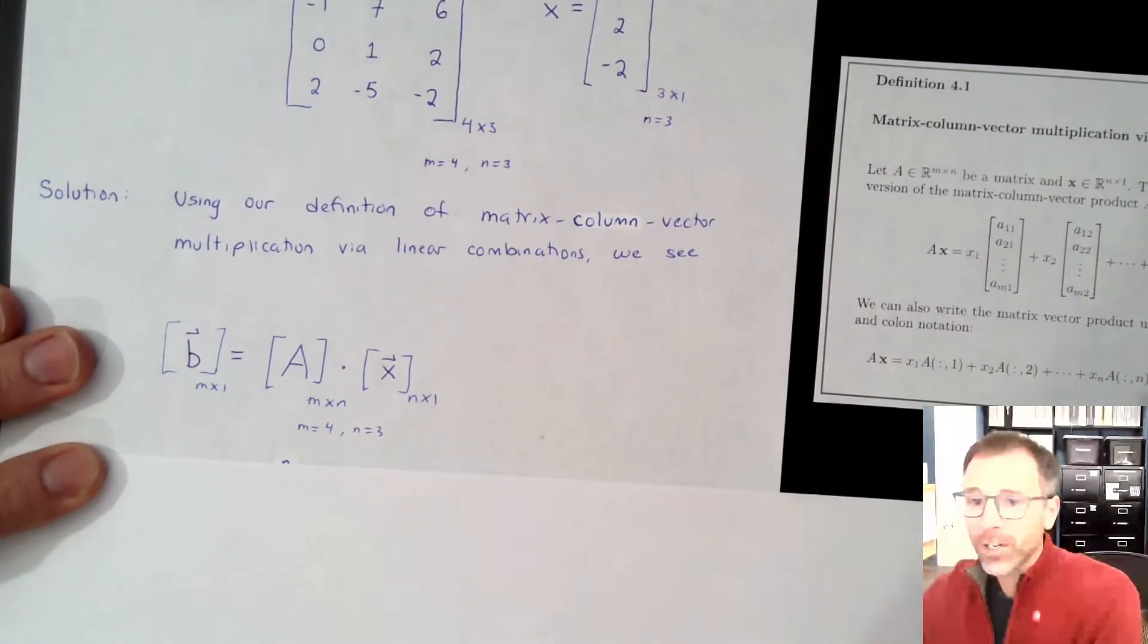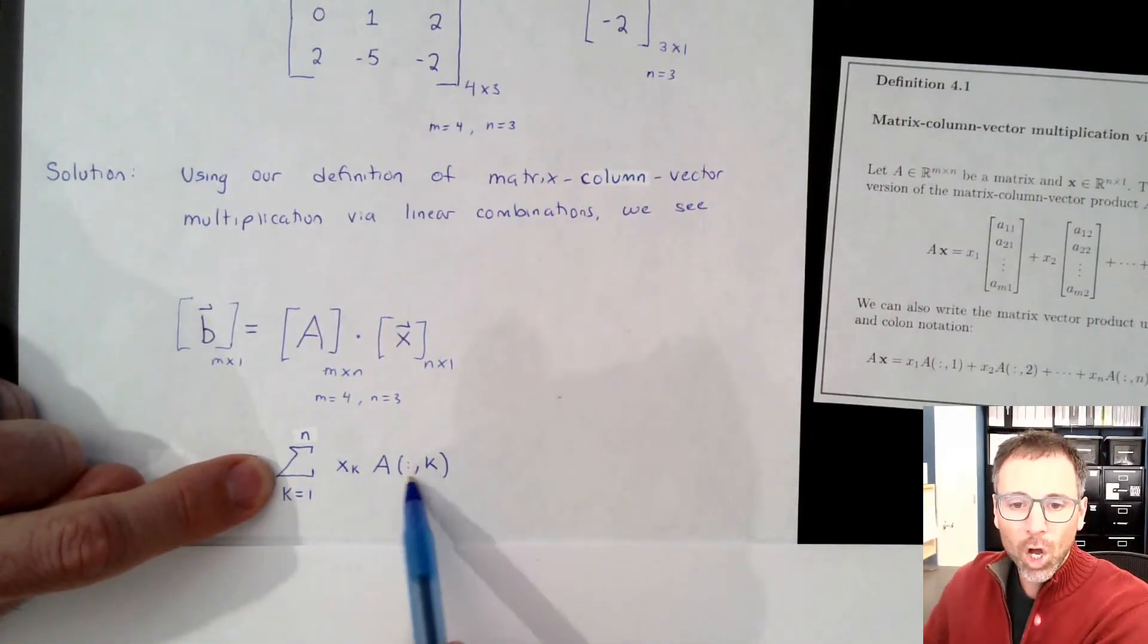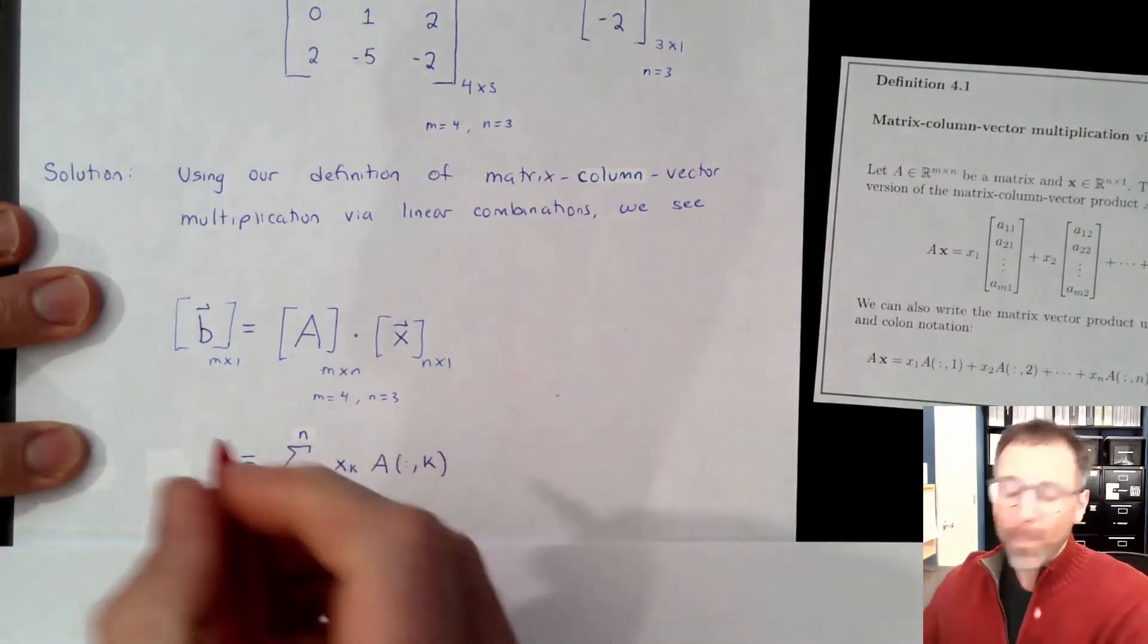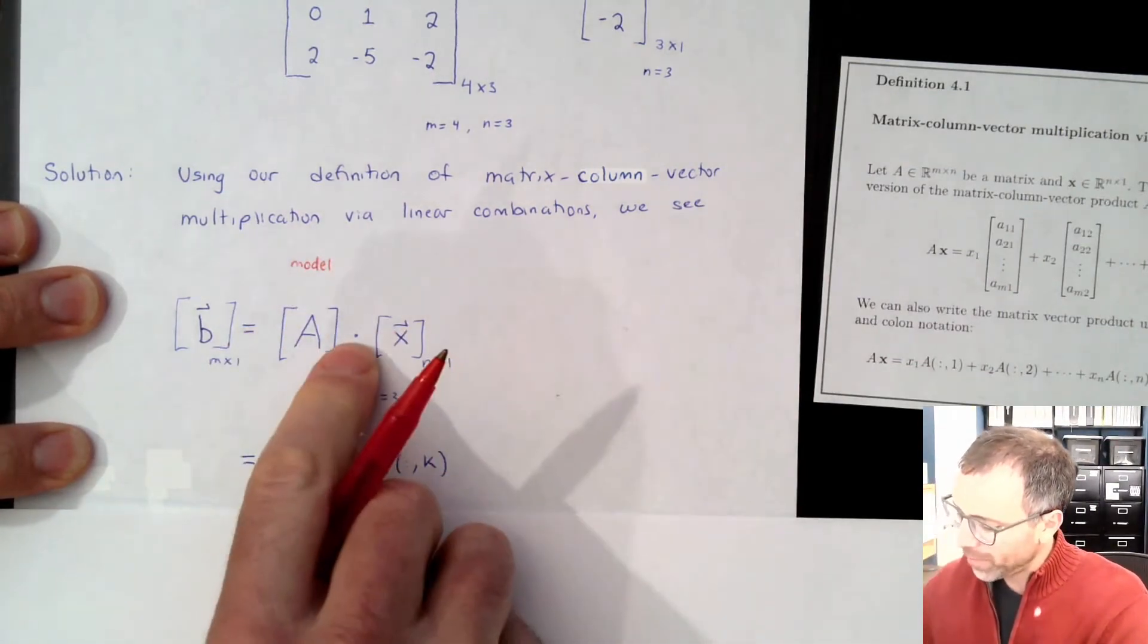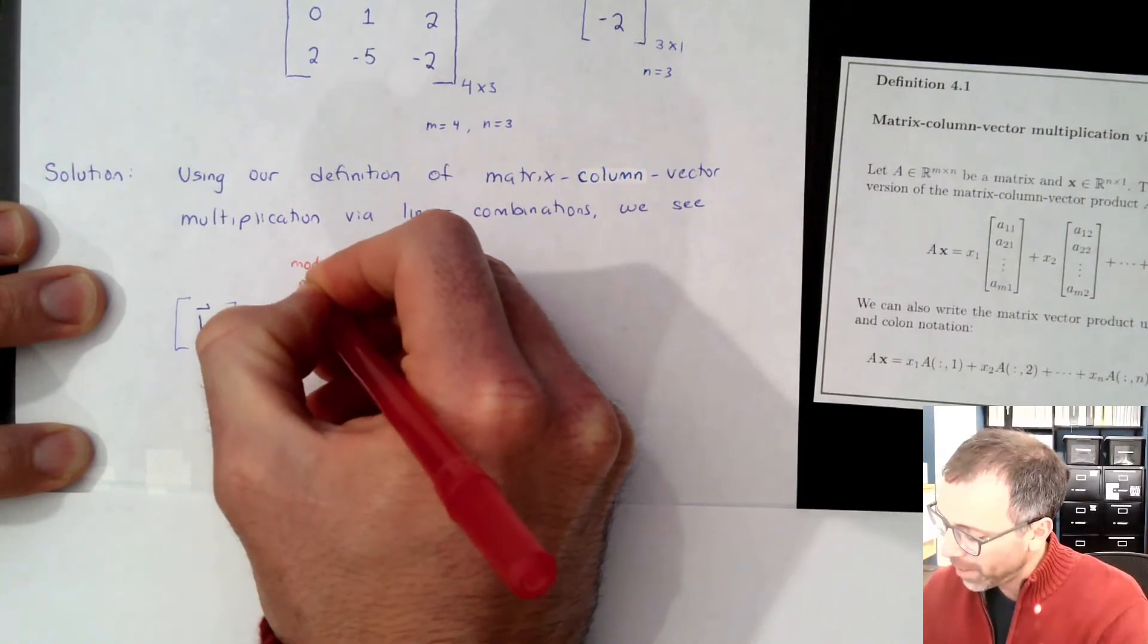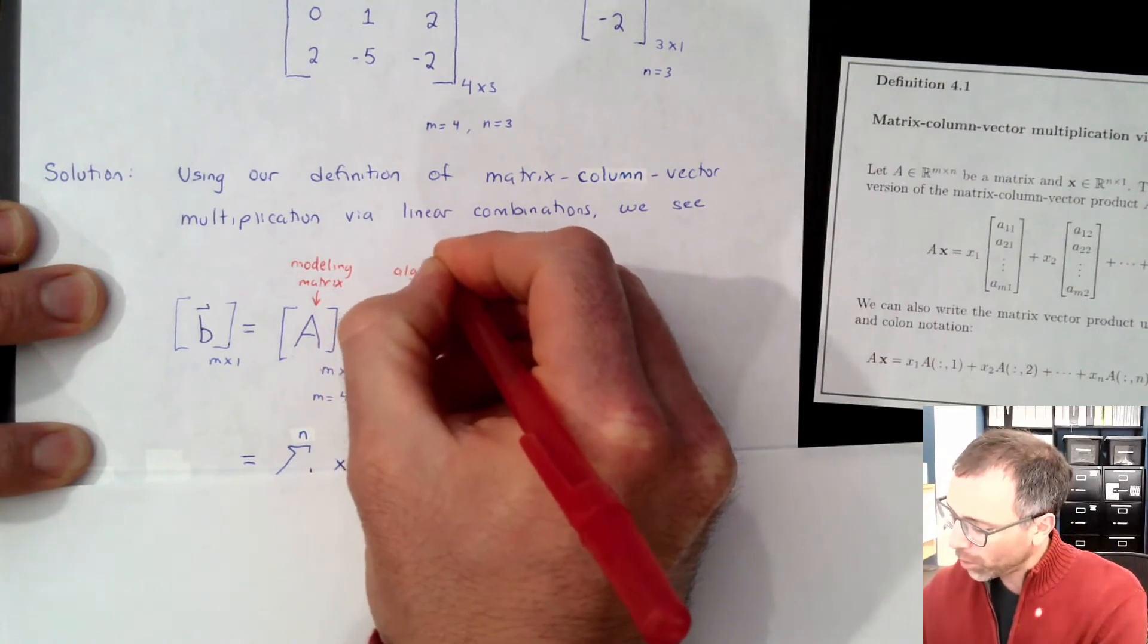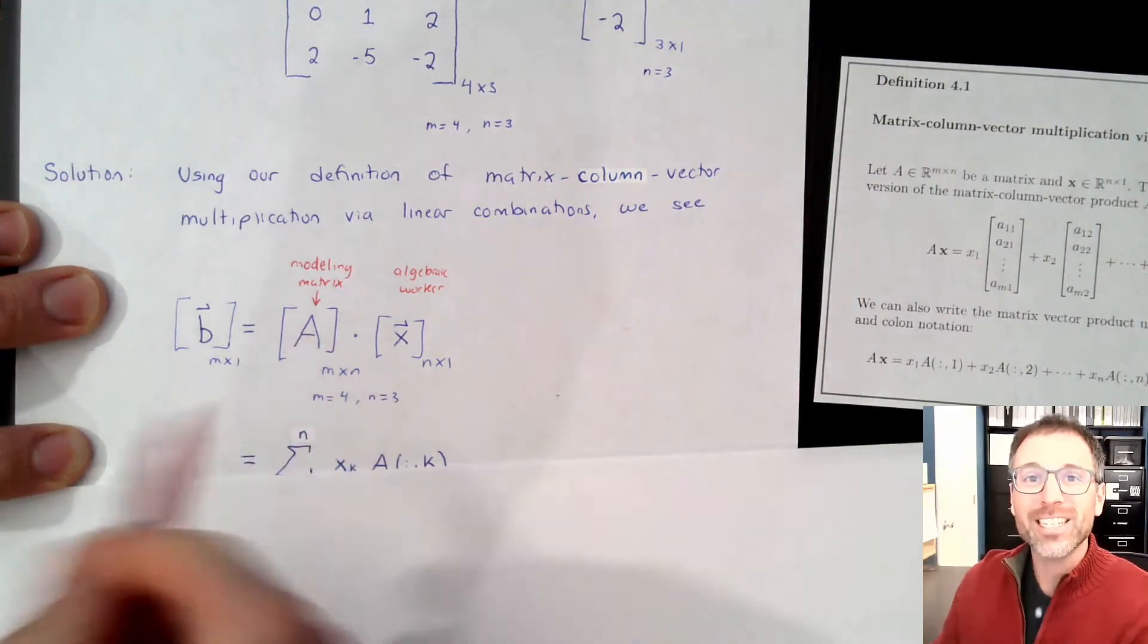We saw that b is going to be a linear combination of the columns of A, where each column gets paired with the associated entry of x. Remember our paradigm that if we call the left factor, so here we have two arguments. We have an argument on the left and an argument on the right. We're going to call this the modeling matrix. That's the one that actually shows up when we create a model. And then this is going to be called the algebraic worker. So this is the thing that we do to translate modeling matrices into better form.